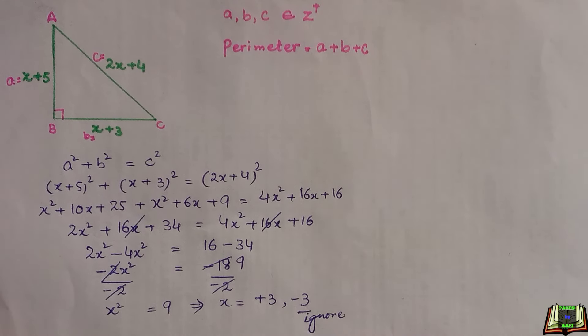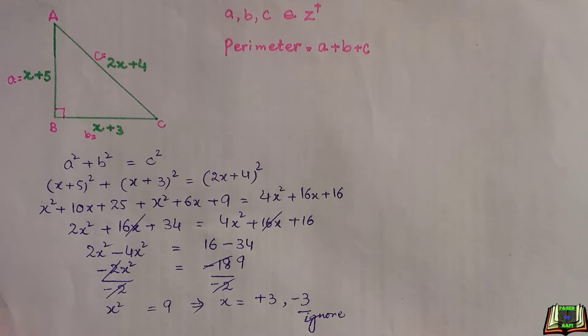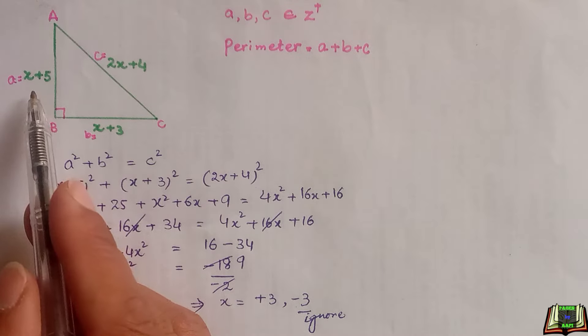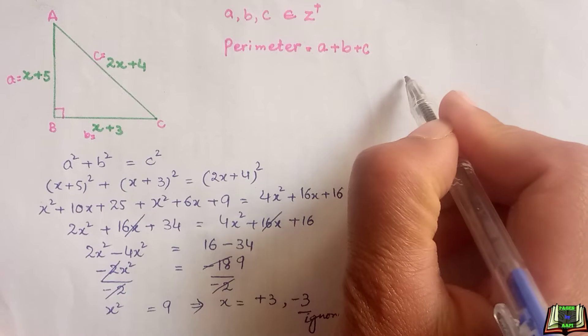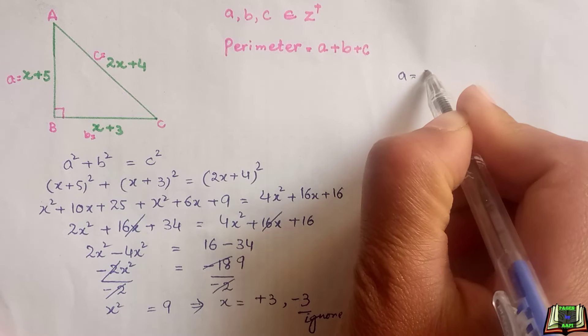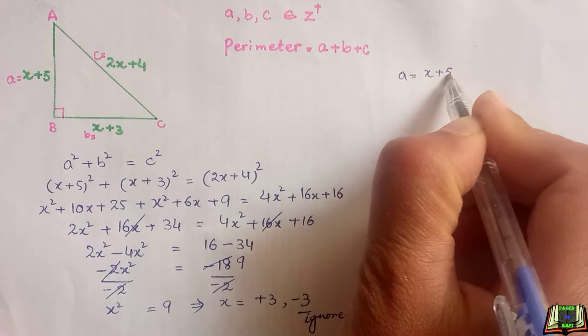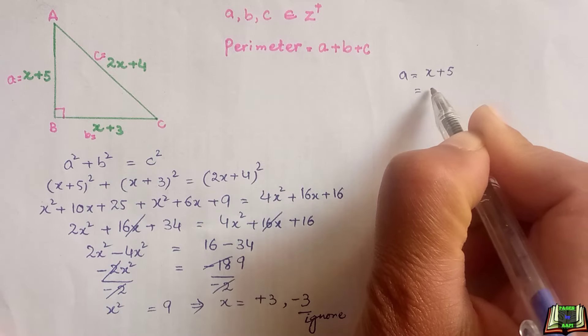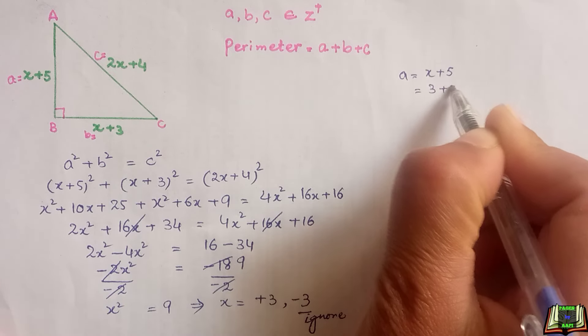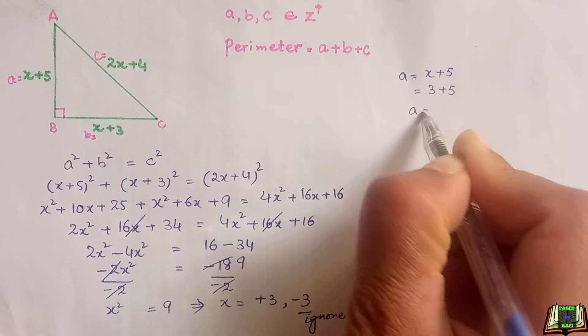So x is equal to 3, and we are going to find out the values of these three sides by putting the value of x equals 3. a is equal to x plus 5. x is equal to 3, so 3 plus 5, a is equal to 8.